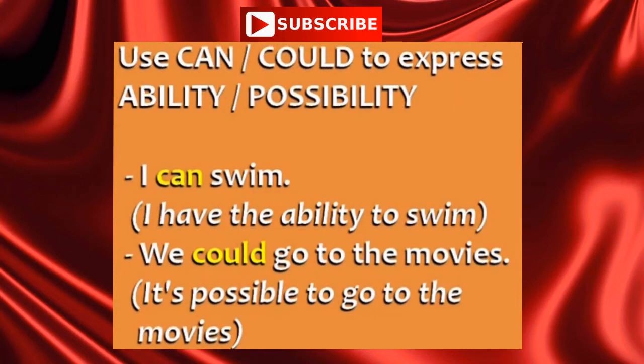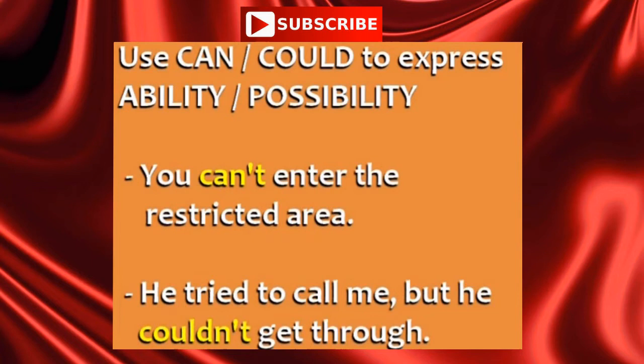Use can and could to express ability and possibility. 'I can swim' means I have the ability to swim. 'We could go to the movies' means it's possible for us to go to the movies. You can also use them in the negative form to express no ability or no possibility. 'You can't enter the restricted area' means it's not possible. 'He tried to call me, but he couldn't get through' — couldn't means it wasn't possible.